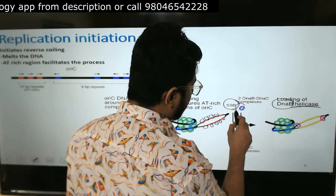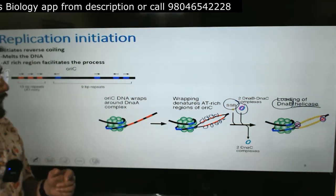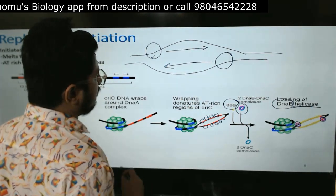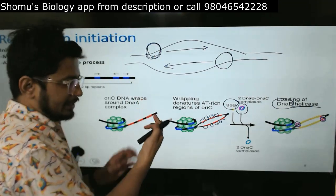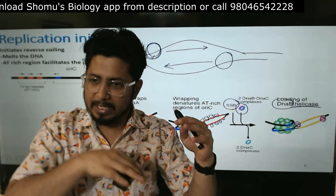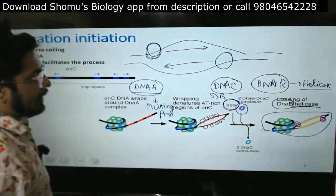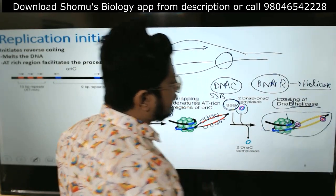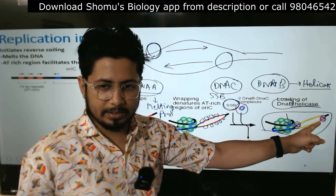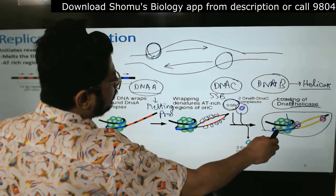DnaB is a hexameric protein — two sets of hexameric proteins are loaded onto the separate melted strands of the DNA. The helicase's role is: it loads itself onto a single-stranded DNA and starts separating the strands from each other. Think of the complete double strand with a hole created by melting — helicase loads into that hole and separates the strands further. The GC-rich sequence has DnaA wrapping around it, single-strand binding proteins keep the strands apart, and the helicase is loaded to continue separating.